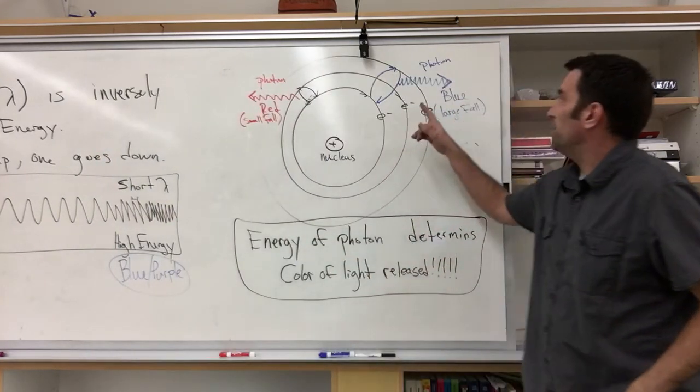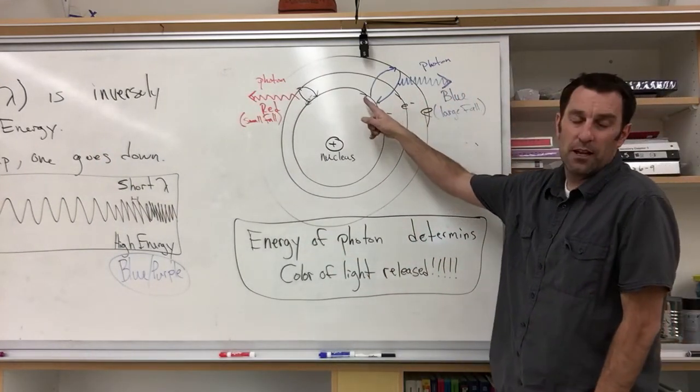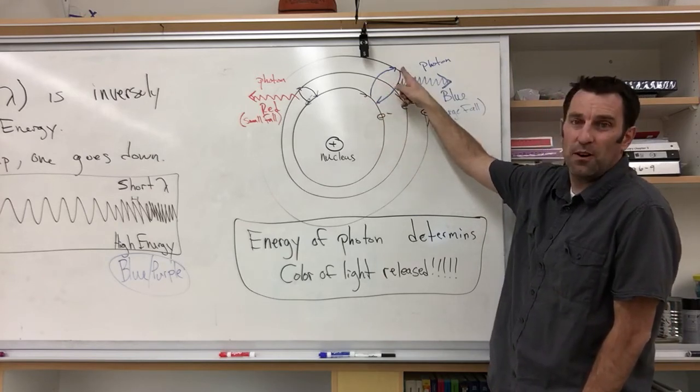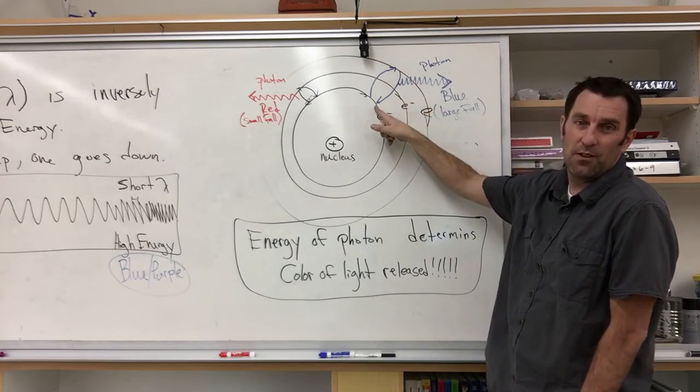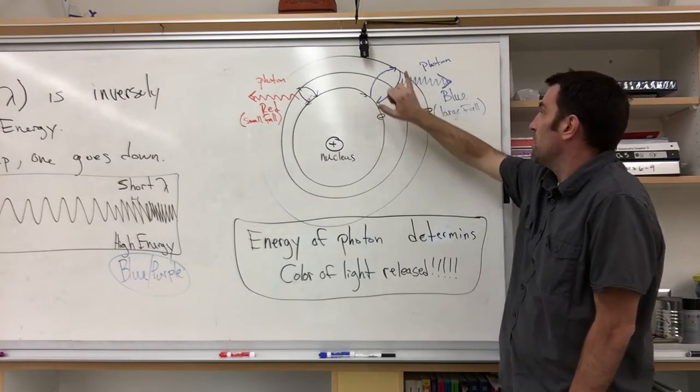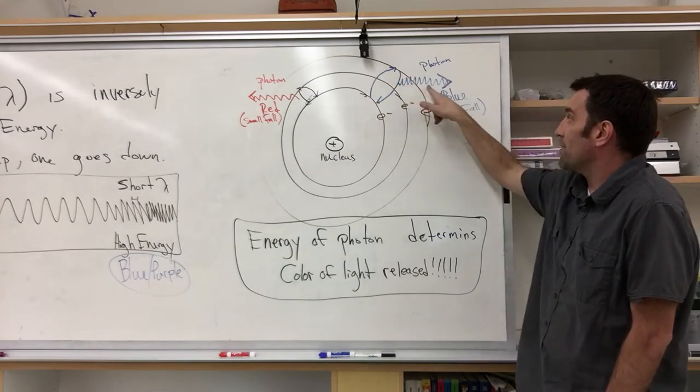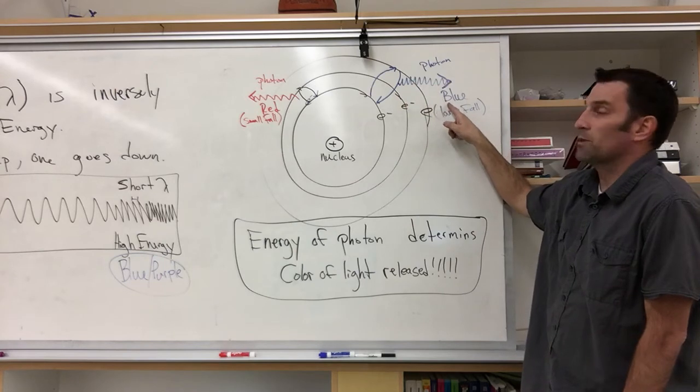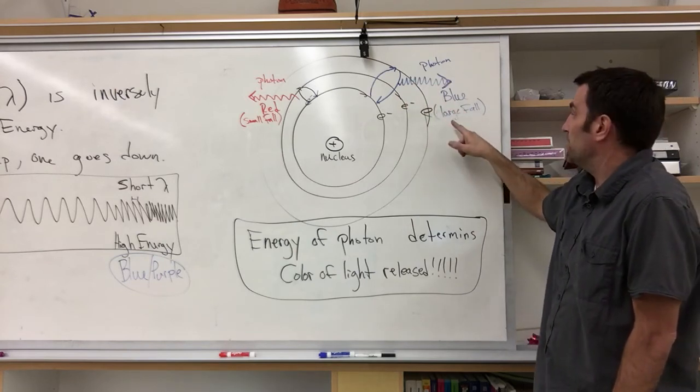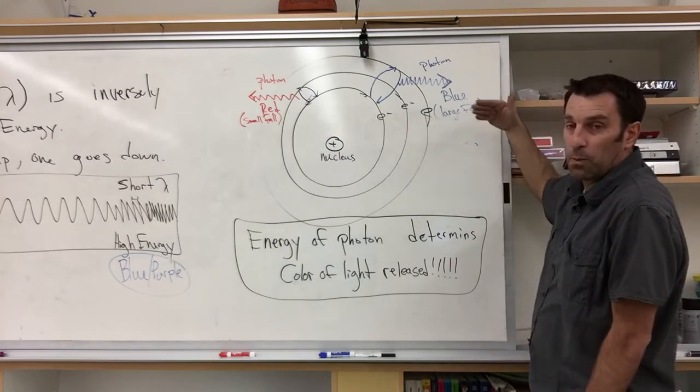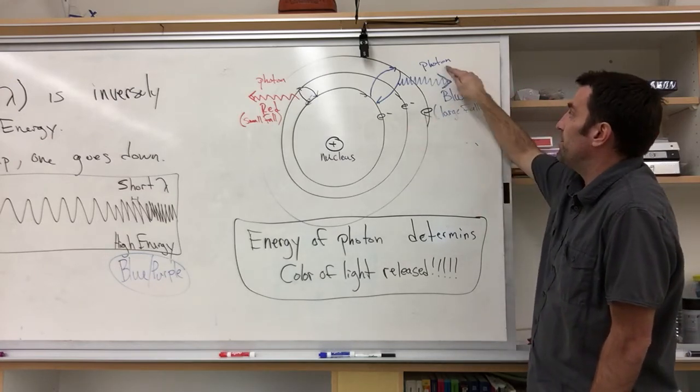Going over, now we have our energy coming in, striking this electron, making it jump to a farther out energy level, causing it then to fall back to where it previously was. Since it's a larger fall, we now have higher energy or shorter wavelength light, we would call that blue. And we'd say that came from a large fall. So a large fall creates a blue or purple-ish colored photon.